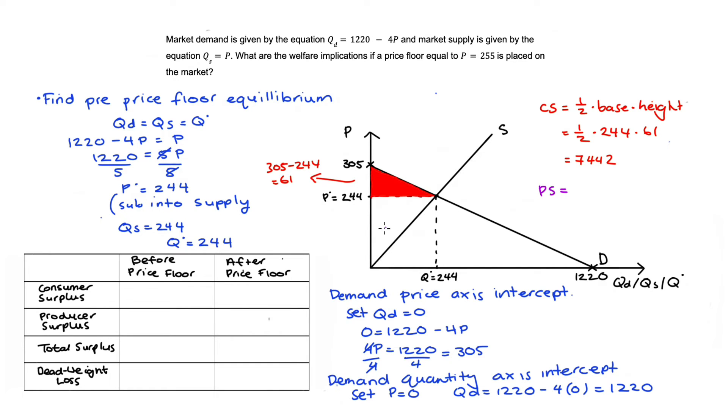Producer surplus (PS) is also a triangle, the area above our supply curve below our price line. The area is half times base times height. In this case the height and the base are both 244, so 1/2 × 244 × 244 = 29,768. Our total surplus is the sum of consumer surplus plus producer surplus, which is 37,210. This is the maximum possible surplus we can get from this market, so there will be no deadweight loss in this scenario.